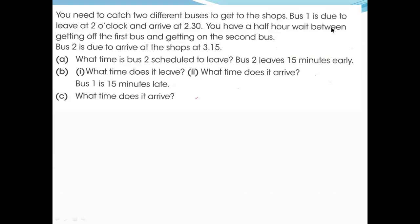Next question: you need to catch two different buses to get to the shops. Bus one is due to leave at two o'clock and arrive at 2:30. You have a half-hour wait between getting off the first bus and getting on the second bus. Bus two is due to arrive at the stop at 3:50. Bus two leaves 15 minutes early - so what time is bus two scheduled to leave? It would be 2:45, since the scheduled time is 3:00 but it leaves 15 minutes early.